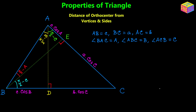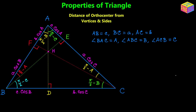Next I am going to draw the third altitude CF, which is perpendicular to AB. In right triangle AFC, angle ACF equals 90° − A. Similarly, in right triangle FCB, angle FCB equals 90° − B since angle CFB is the 90° angle. The projection of AC onto AB is AF = b·cos(A), and the projection of BC onto AB is FB = a·cos(B).